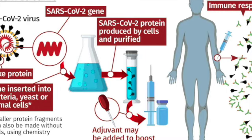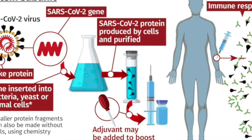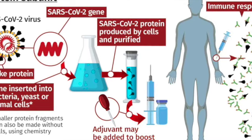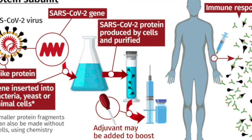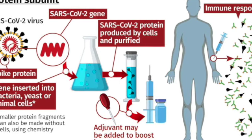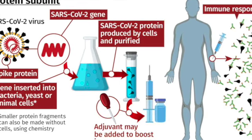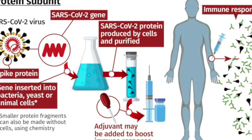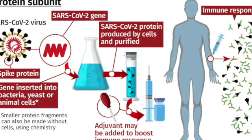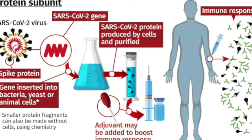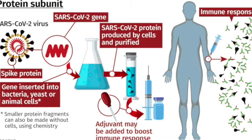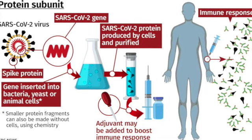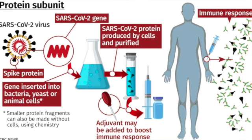Subunit, recombinant, polysaccharide, and conjugate vaccines use specific pieces of the germ — like proteins, sugars, capsids, and casings around the germ. Because these vaccines use only specific parts of the germ, they give a very strong immune response that is targeted to key parts of the germ. They can also be used on almost everyone who needs them, including people with weakened immune systems and long-term health problems. One limitation is that you may need booster shots to get ongoing protection against disease.